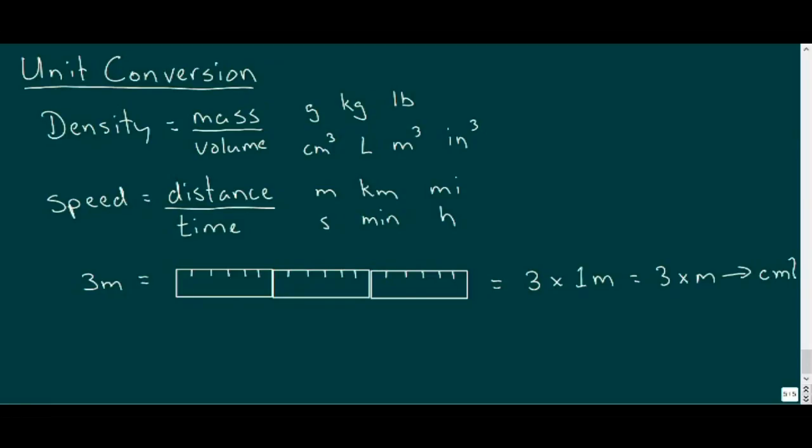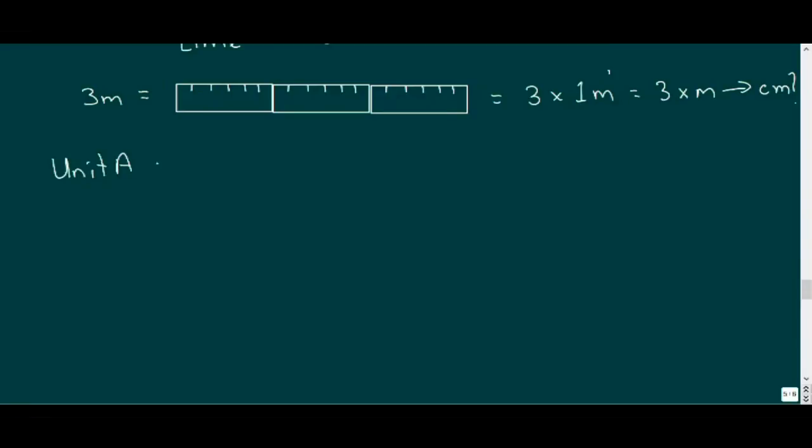But what if we wanted to know that same measurement in centimeters? Well, this is where the skill of unit conversion comes in, where we multiply our measurement by a ratio of a number of B units to a number of A units, provided that ratio is equivalent to 1. So our 3 meter measurement, multiplied by a ratio of centimeters to meters, with 100 centimeters equal to 1 meter, will yield a result of 300 centimeters.